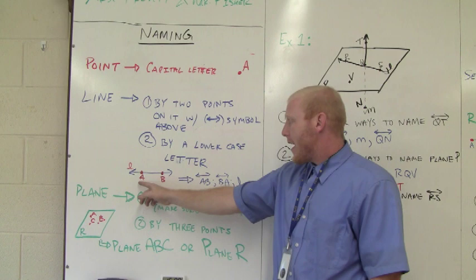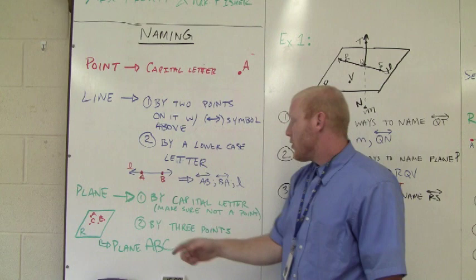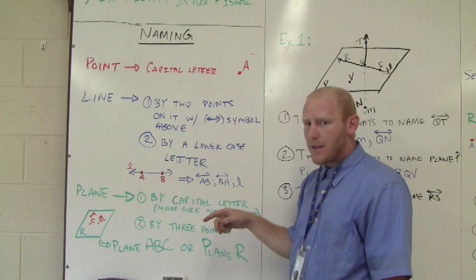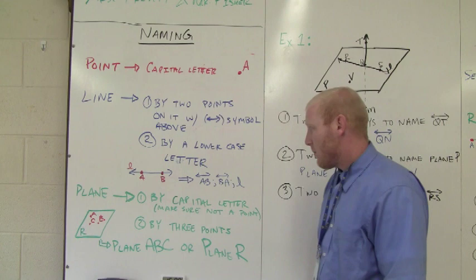So as you see here, we have line AB because there are two points on it, and we have a lowercase L next to it. So you could say this is line AB, but it's important that we have the arrows on the symbol so we know it's a line. Line BA or L for the lowercase.